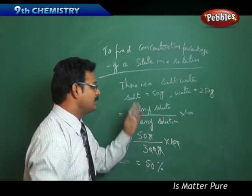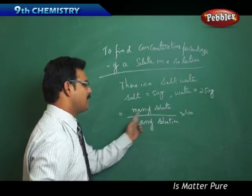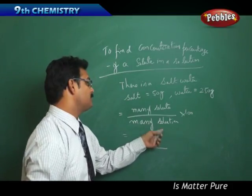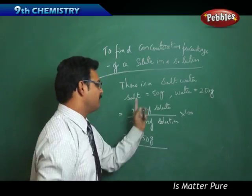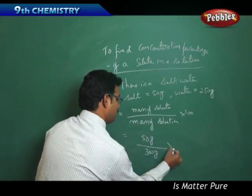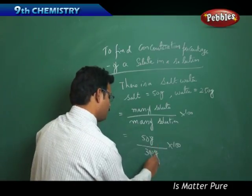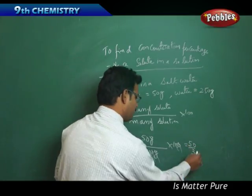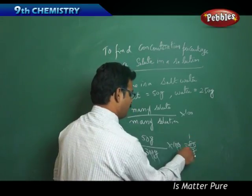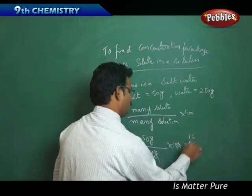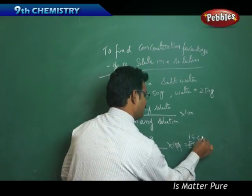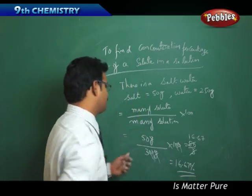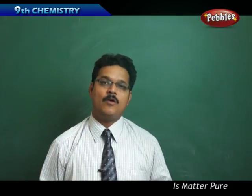So mass of solute is 50 grams, mass of solution is 300 grams, multiplied by 100. The grams cancel and we are left with 50 divided by 3. Simplifying: 50 divided by 3 equals approximately 16.67. So the percentage concentration of salt in that solution is approximately 16.67 percent.